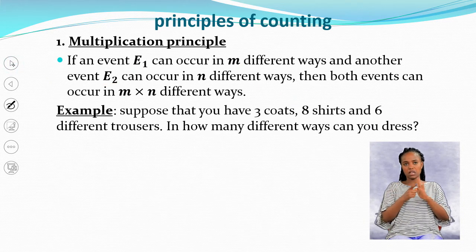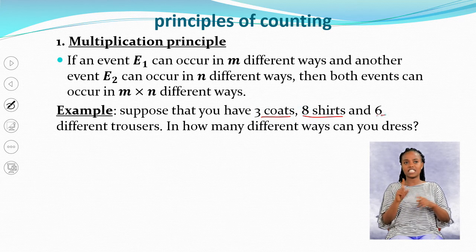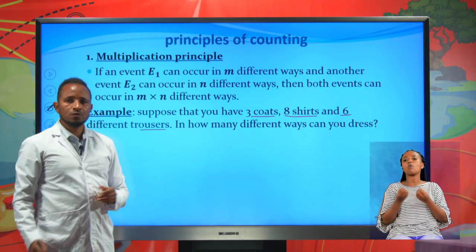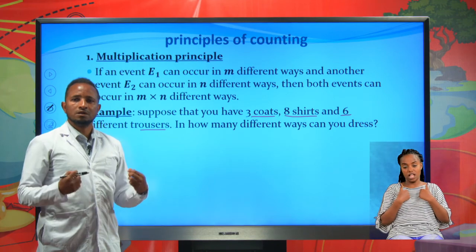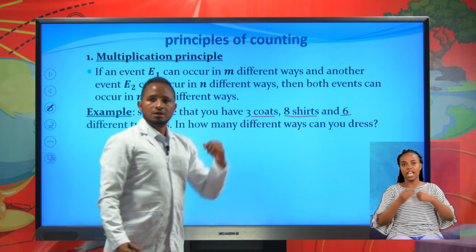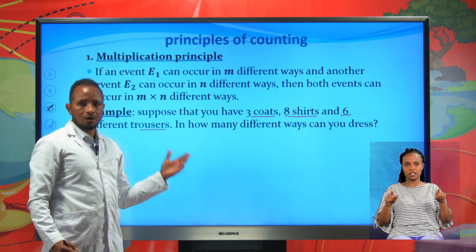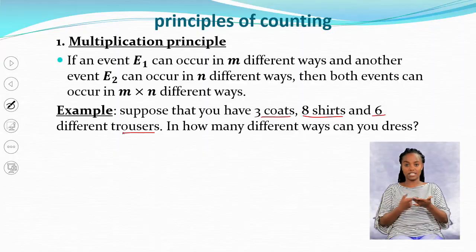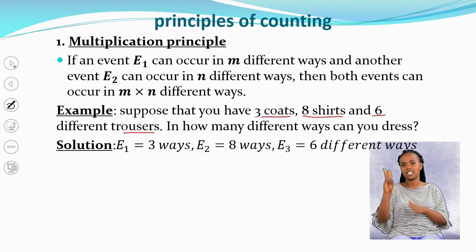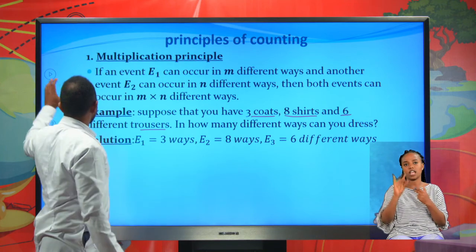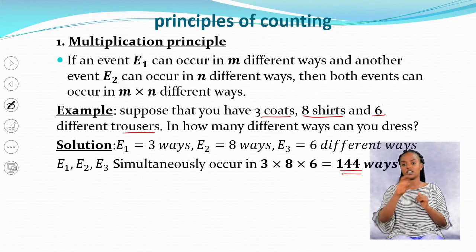Suppose you have three coats, eight shirts, and six different trousers. In how many different ways can you dress? We have event E1 with three different ways for coats, event E2 with eight ways for shirts, and event E3 with six ways for trousers. These events together occur in 3 × 8 × 6 = 144 different wearing styles.